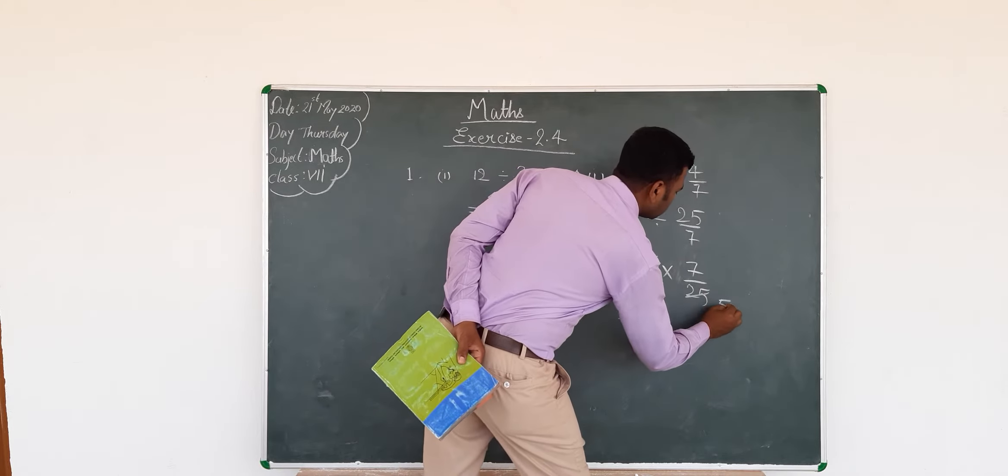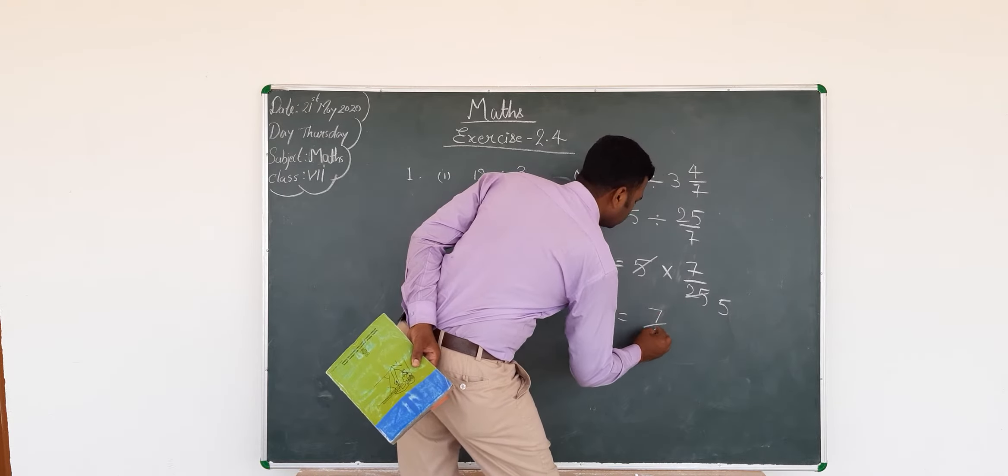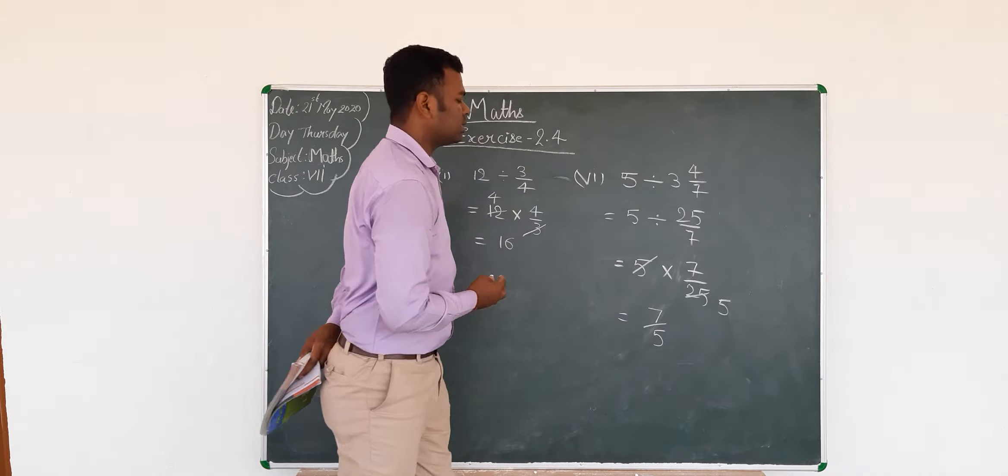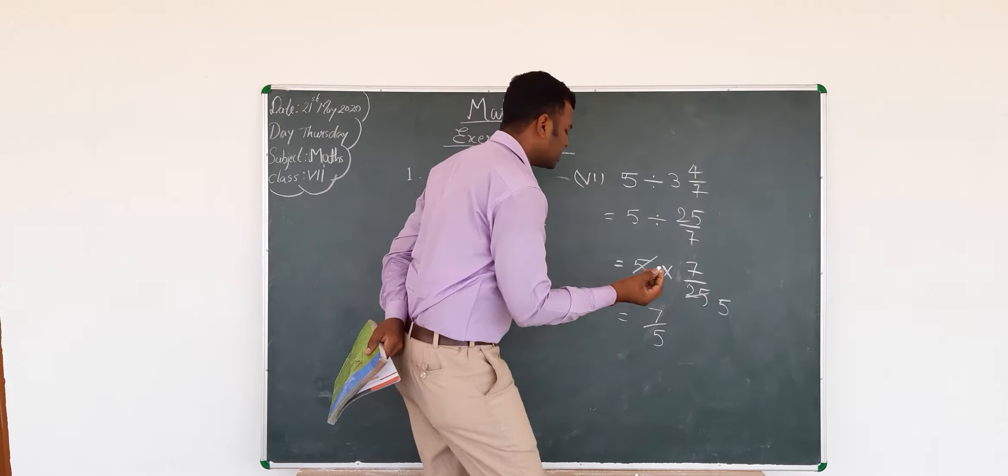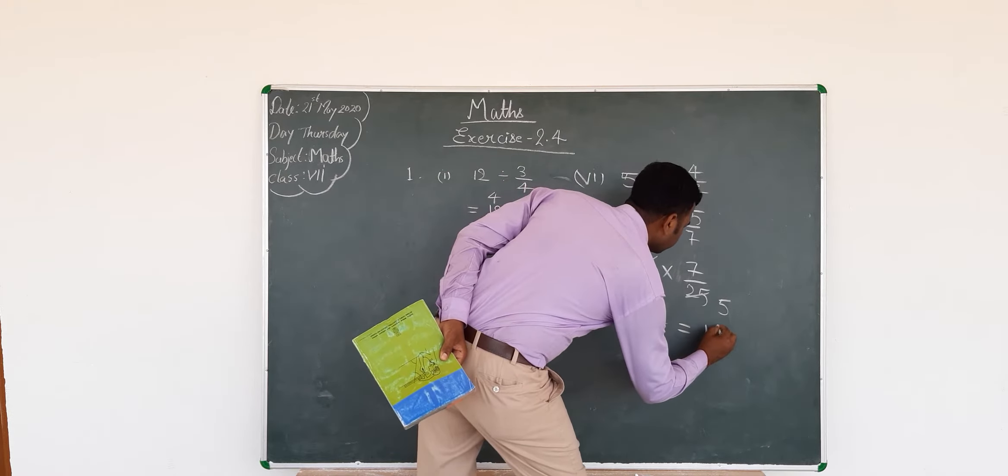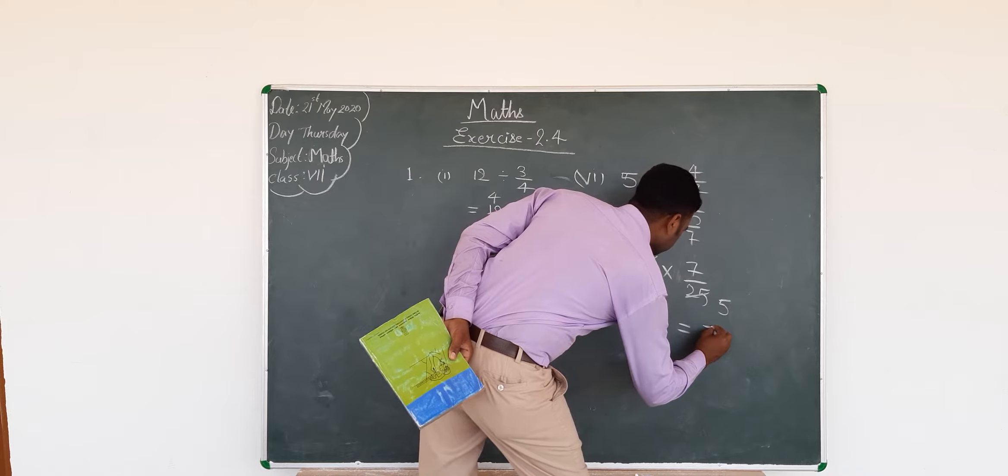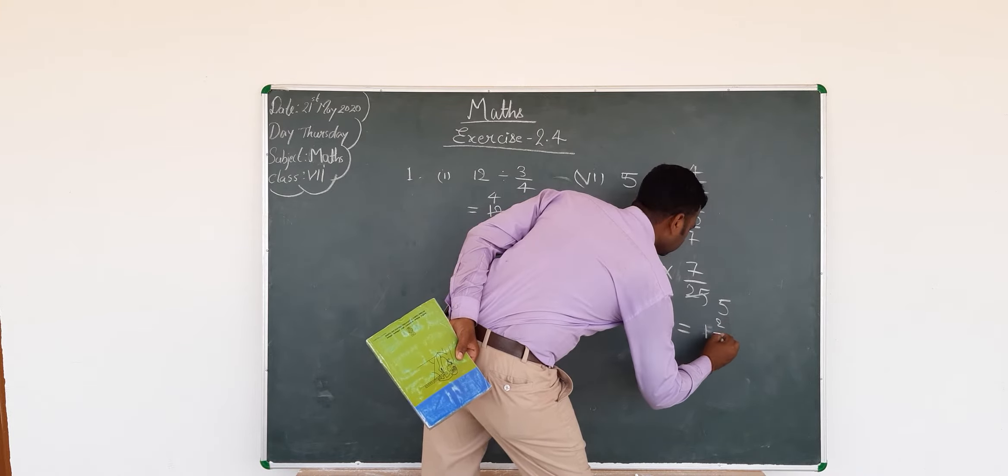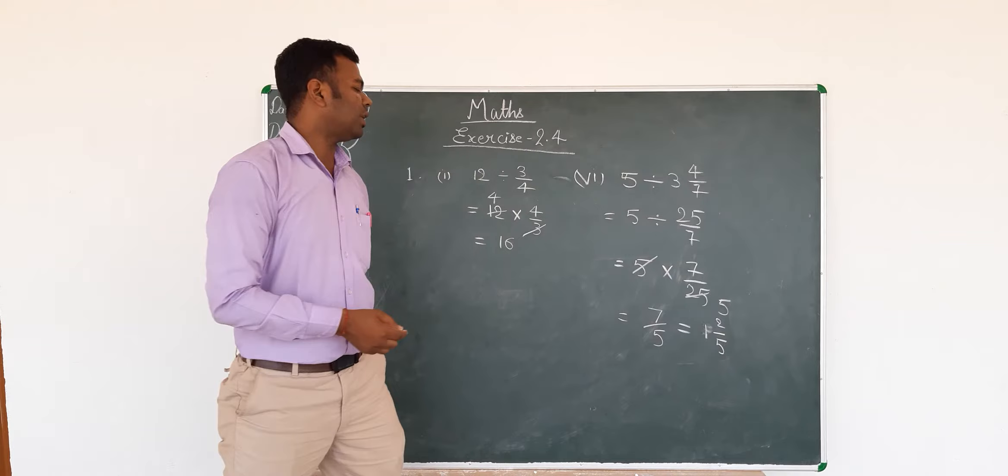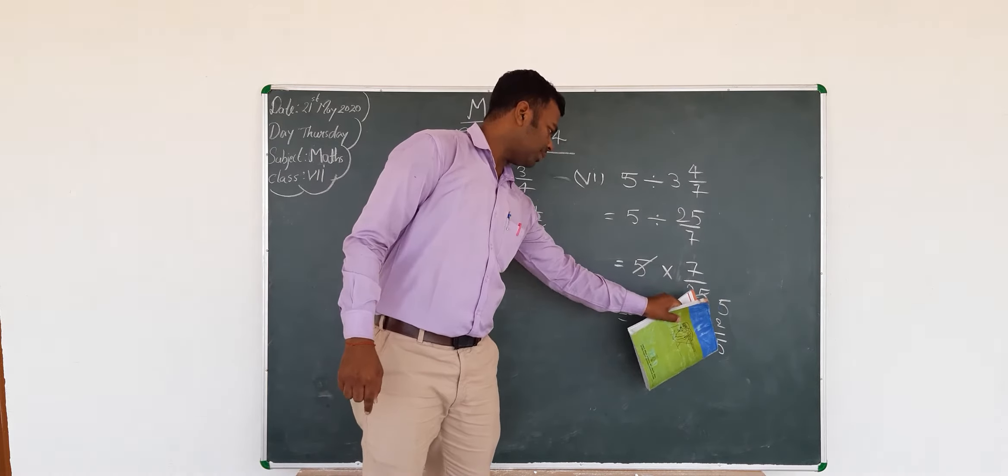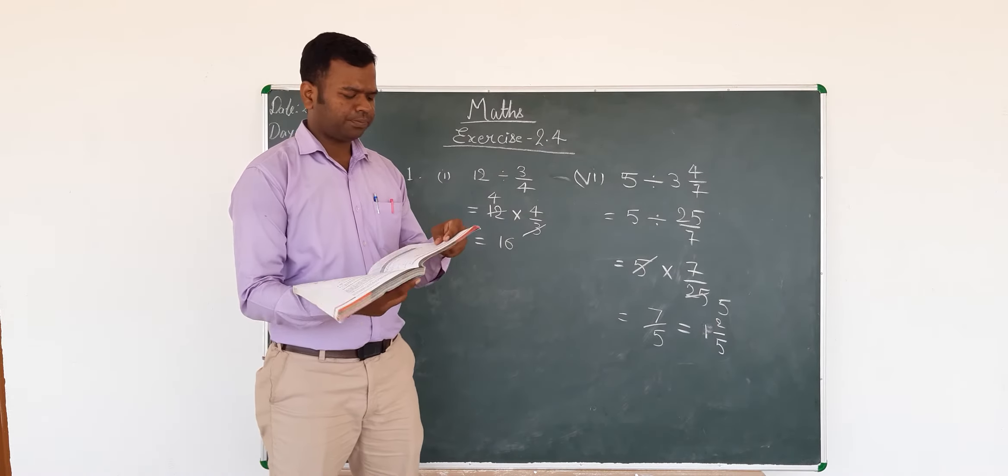5 divided by 5 is 1, so the answer is 7/5. You can write it as the mixed fraction 1 2/5.